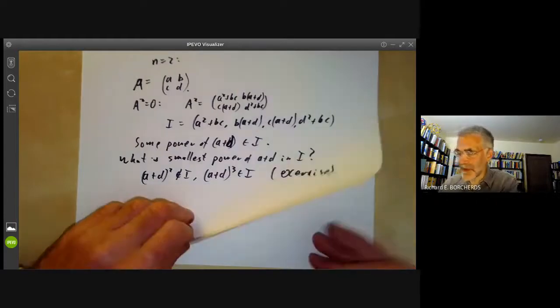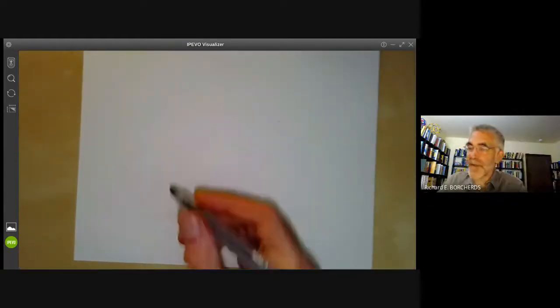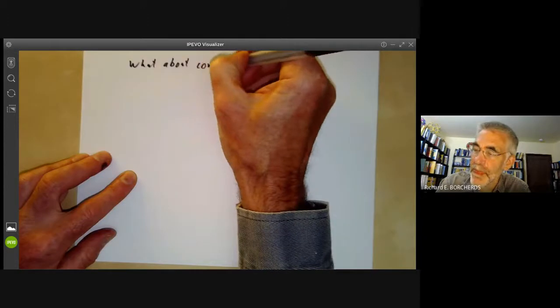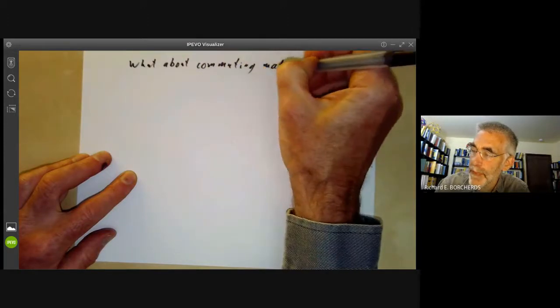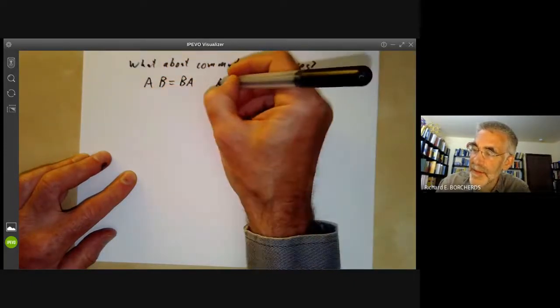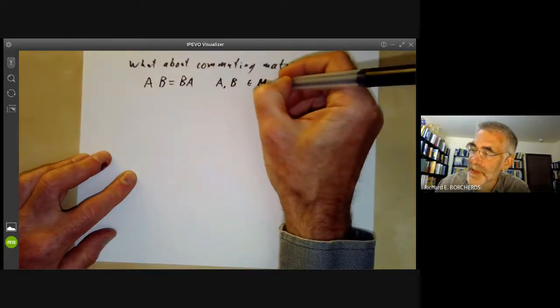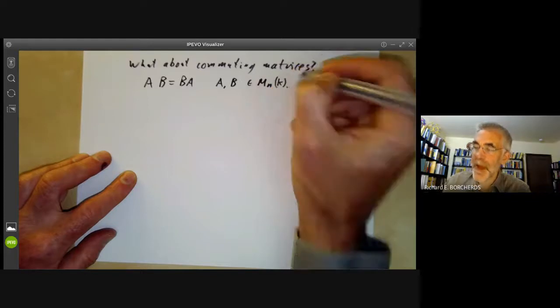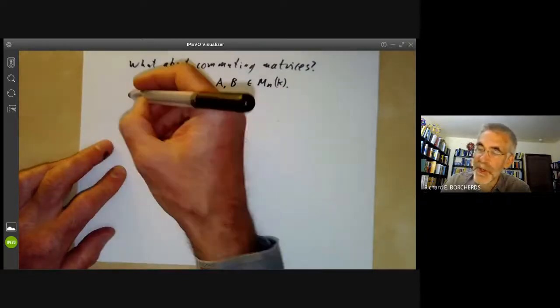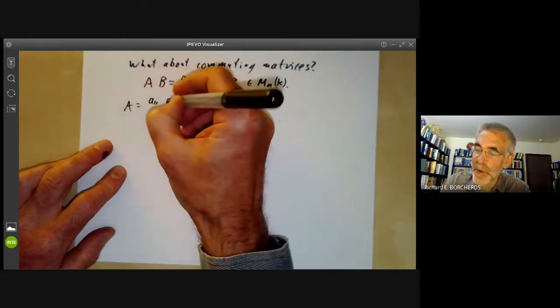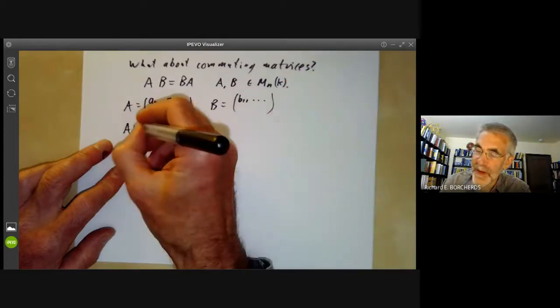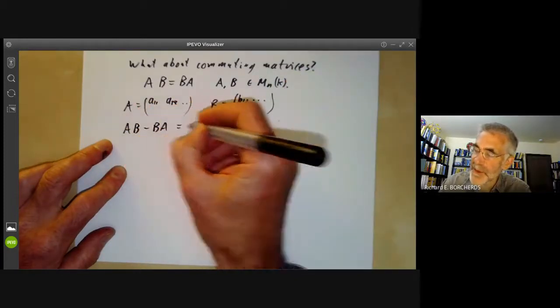The next example is the following. Well, we looked at nilpotent matrices. What about commuting matrices? So let's look at the condition AB equals BA for A, B both n by n matrices. And we want to find the space of matrices that commute with each other. Well, what we do is we set A equals (A_11, A_12), etc. B equals (B_11) and so on.